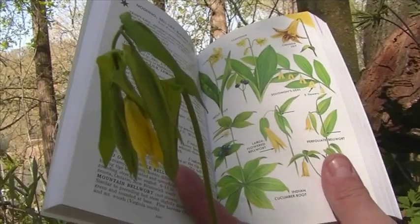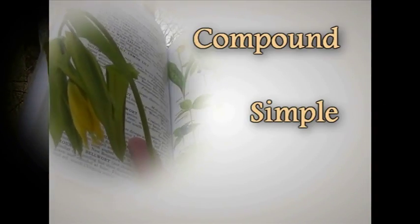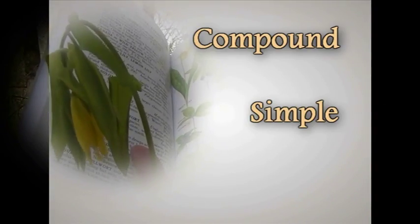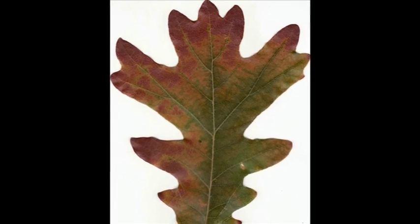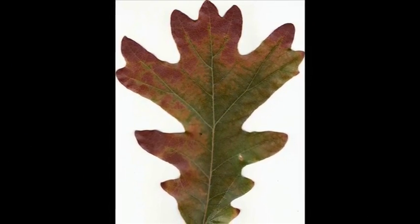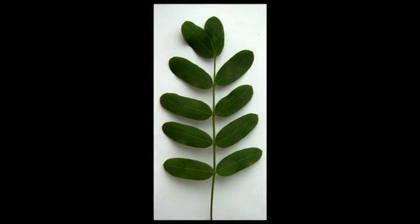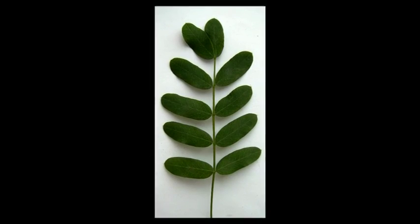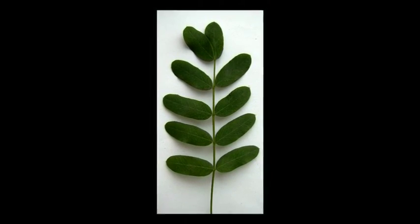Begin identifying by looking at the leaves. Leaves are categorized as being simple or compound. Simple leaves, like that of an oak, have blades that are one continuous piece. Compound leaves have multiple leaflets. An example of a compound leaf type may be found on the lead plant.